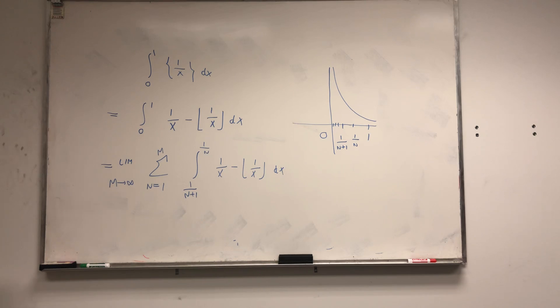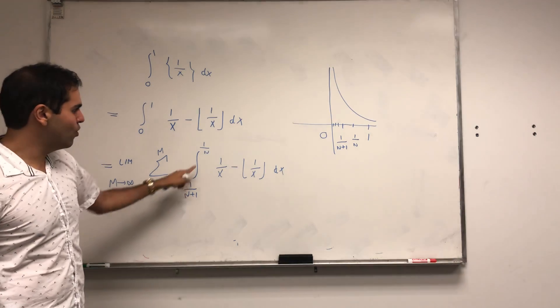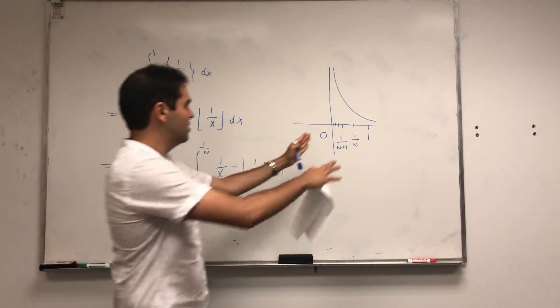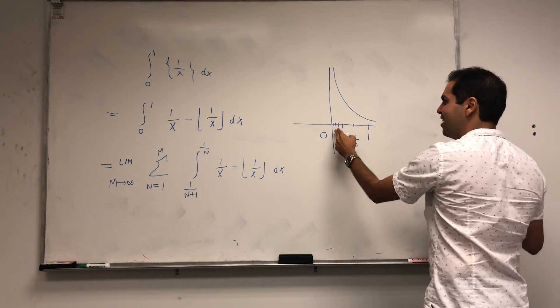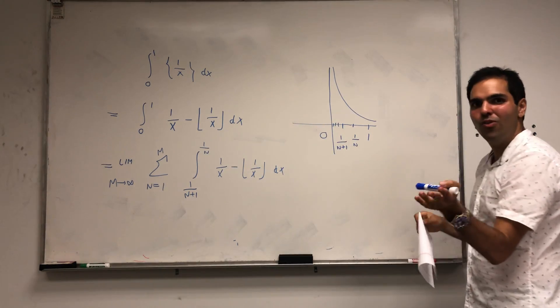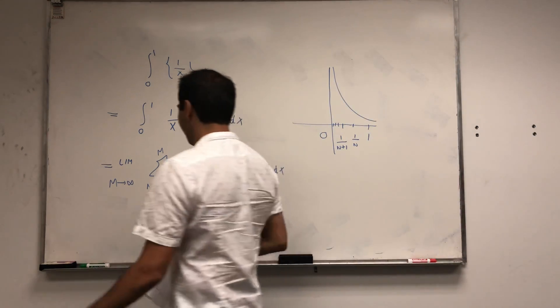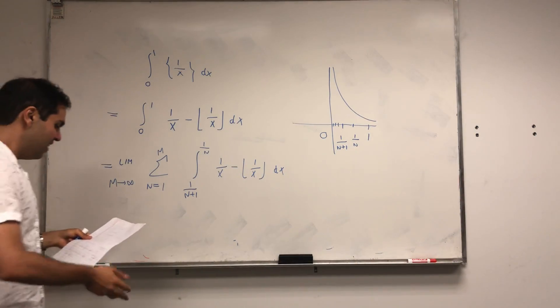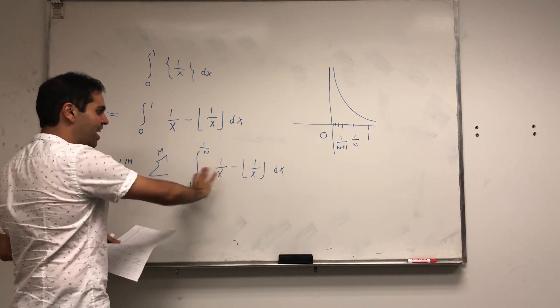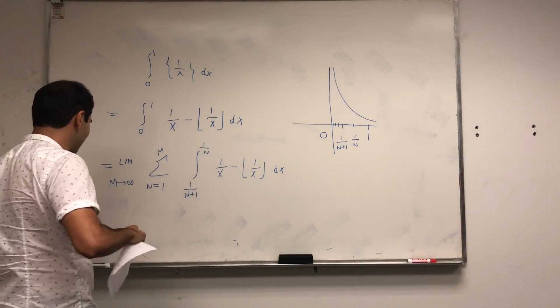So this becomes the limit as m goes to infinity of the sum from 1 to m of this thing. So just convince yourself that this is true, because if n is 1, this is integral from 1 half to 1, and then integral from 1 third to 1 half, integral from 1 fourth to 1 third, et cetera, up to integral from 0 to epsilon or something. Now we can actually evaluate this integral and we don't have to worry about infinities.